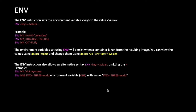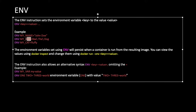The next instruction is ENV. ENV sets an environment variable as a key-value pair. For example: ENV MY_NAME=John Doe, and ENV MY_DOG=reg/the/dog. You can define the variable with a name like 'flippy' and set its value accordingly.